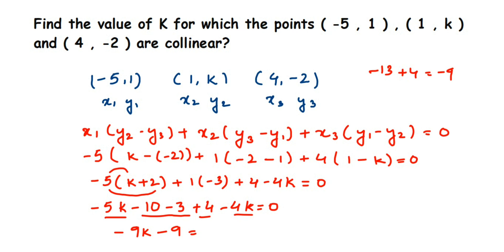Since we want the value of k, transpose -9 to the other side. Minus becomes plus, so -9k = 9. Now transpose -9, which is in multiplication, so it becomes division. Cancel the numbers, you get -1. So k = -1.